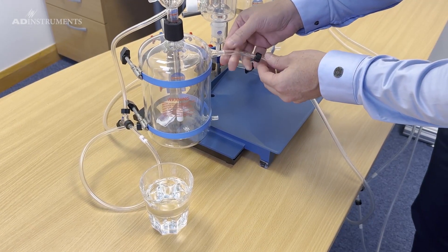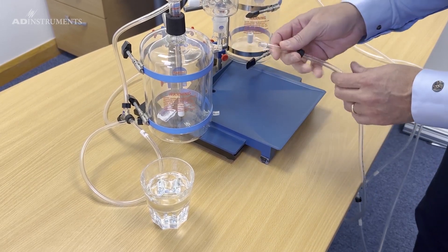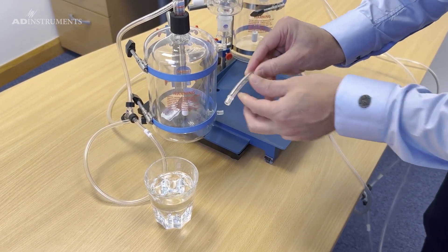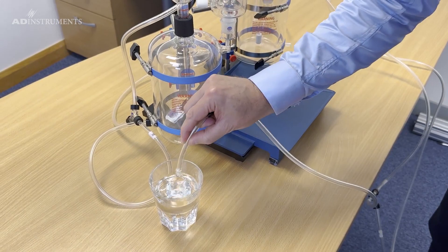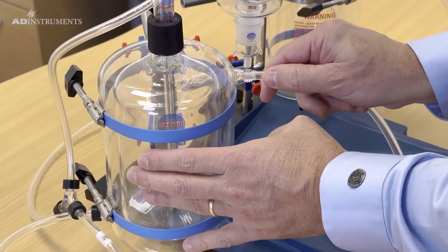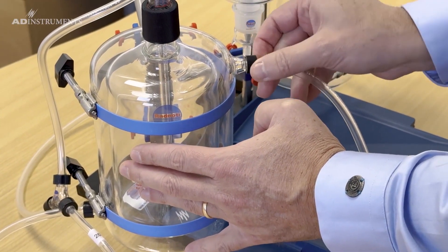These will fill up and then again through a Y adapter back to the heated water circulator. As a tip, if it is difficult to fit the tubing to the ports, just dip it in some water and then you'll see it will slide in quite easily.